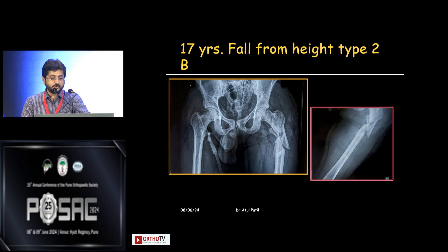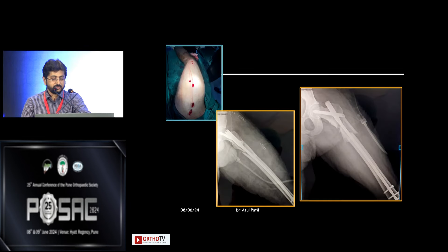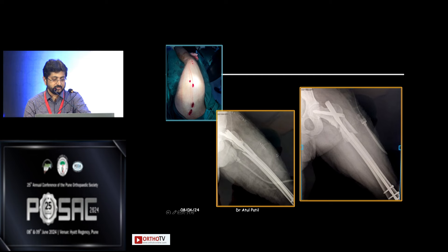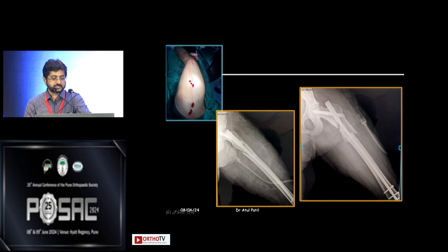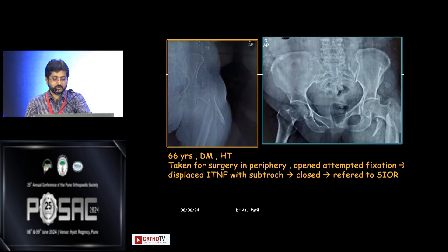Another patient — a 17-year-old, fall from height, very bad subtrochanteric fracture. Two entry point attempts are visible: initially, the entry was not reaching the medial side of the tip of the trochanter, requiring repositioning more proximally. With assisted reduction for the anterior spike, a long TFNA was placed and fixation completed successfully.